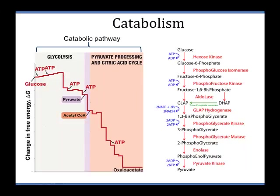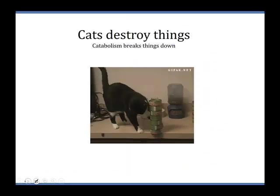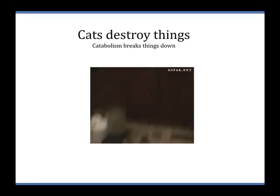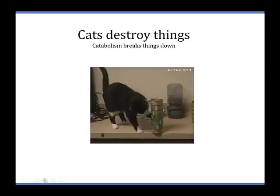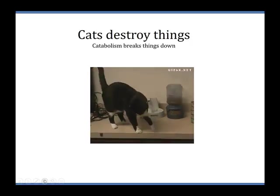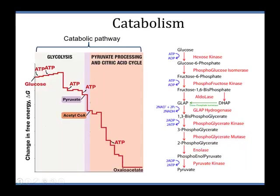We can split metabolic pathways into two types: catabolic pathways and anabolic pathways. Catabolic pathways are where you break things down. Anabolic pathways are where you build molecules up. Let's take a look at a catabolic pathway here.